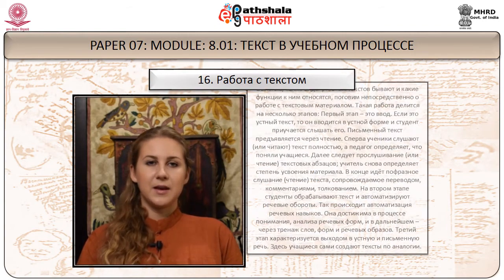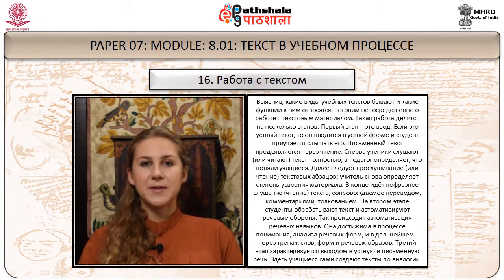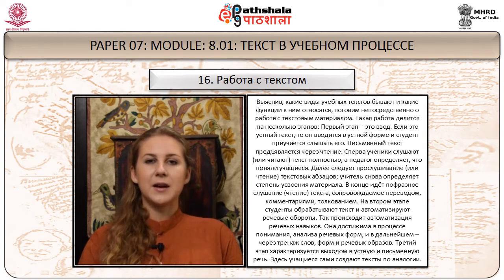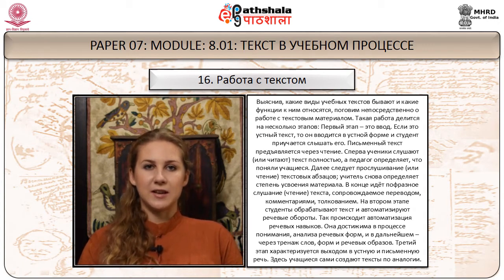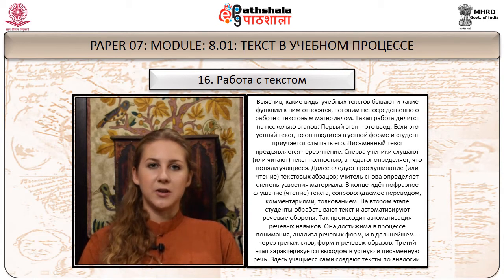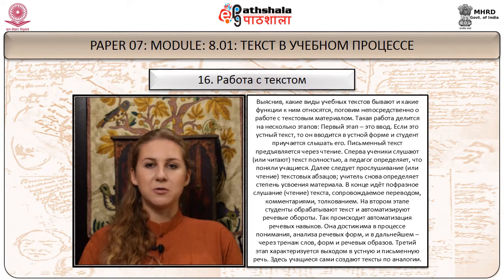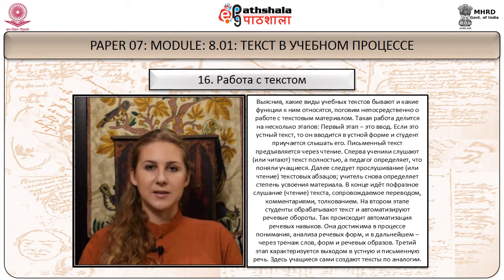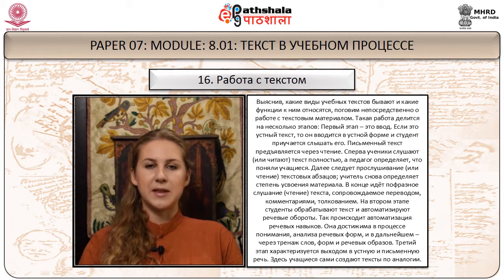Работа с текстом. Выяснив, какие виды учебных текстов бывают и какие функции к ним относятся, поговорим непосредственно о работе с текстовым материалом. Такая работа делится на несколько этапов. Первый этап — ввод. Если это устный текст, то он вводится в устной форме и студент приучается его слышать; письменный текст предъявляется через чтение. Сперва ученики слушают или читают текст полностью, педагог определяет, что поняли учащиеся. Далее следует прослушивание или чтение абзацев, а в конце — пофразное слушание или чтение с переводом, комментариями, толкованием.